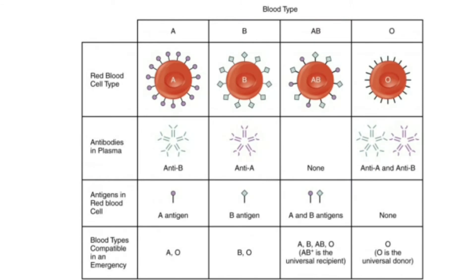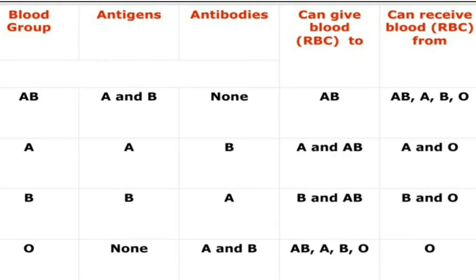Let us look at the various blood transfusion compatibilities. Blood group A can donate to blood group A and AB persons. Blood group A is compatible with blood group A, so a person with A blood group can donate to another A blood group person. Blood group A can also donate to AB, because AB has no antibodies, so no antigen-antibody reaction will occur. Blood group A can receive blood from blood group A and O persons. Blood group O has no antigens, so no antigen-antibody reaction will occur between A and O, meaning an A person can receive blood from an O person.